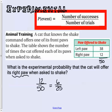So the experimental probability that the cat will offer its right paw, if we did this experiment 50 times, and if you look at here, the cat shook 12 out of 50 times, or 6 out of 25. And if we look at this, that would be the experiment that we did. Because if you think theoretically, it should be one half, right? Left paw versus right paw.